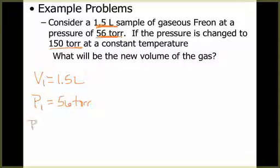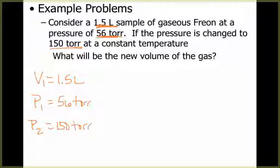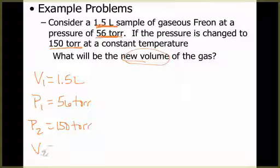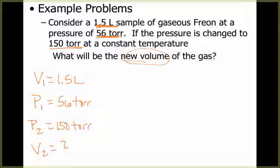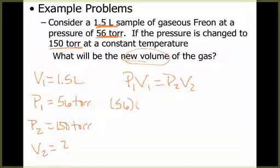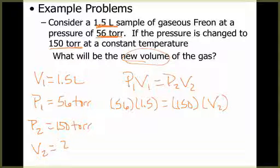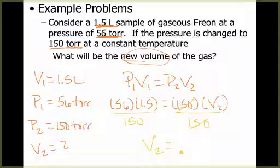Then the pressure is changed, so now I have a new pressure: P2 = 150 torr. It says constant temperature, so if temperature is not changing, I don't need to worry about it in my equation. The question asks for the new volume, so V2 is what I'm solving for. Using P1V1 = P2V2: substituting in, 56 × 1.5 = 150 × V2. Dividing both sides by 150, V2 ends up being 0.56 liters.